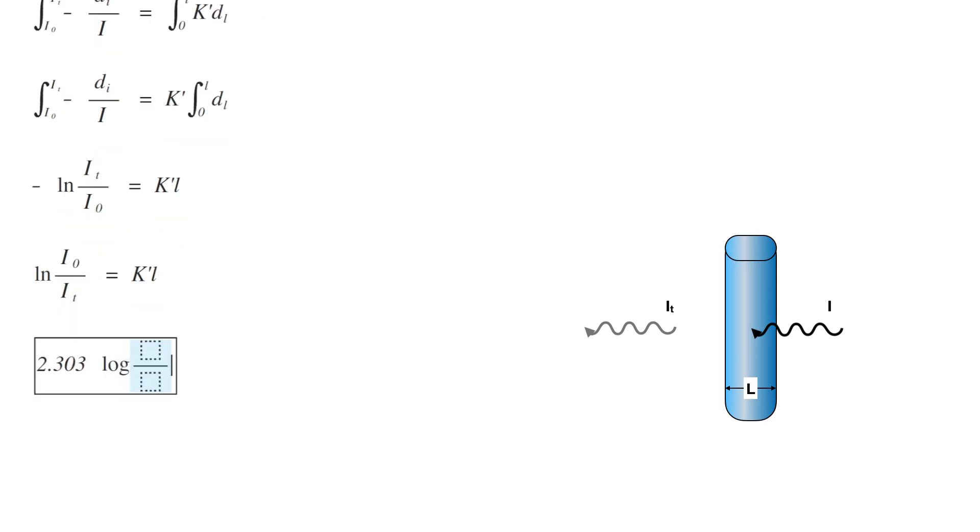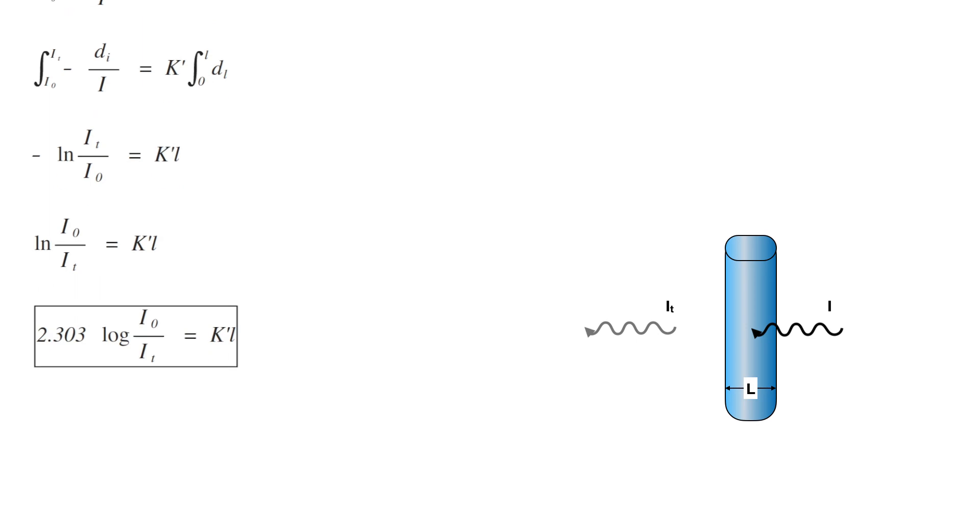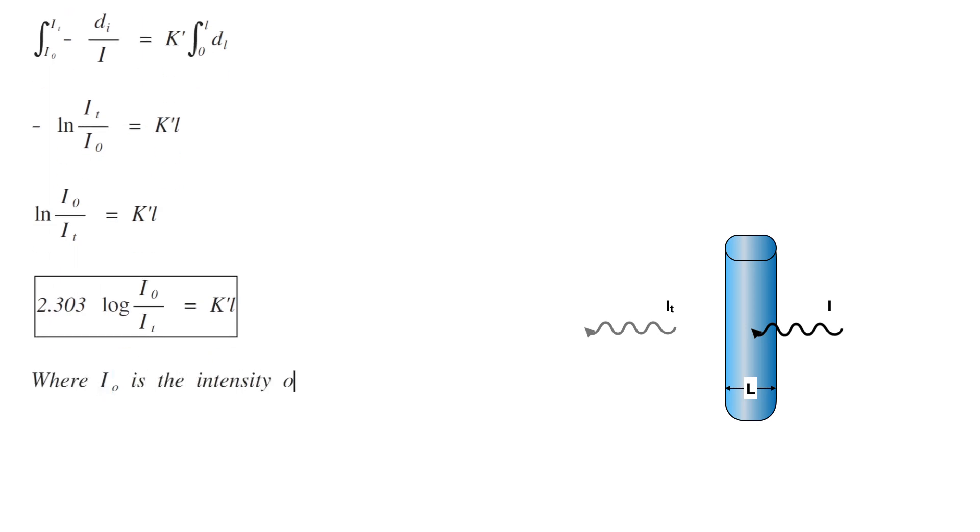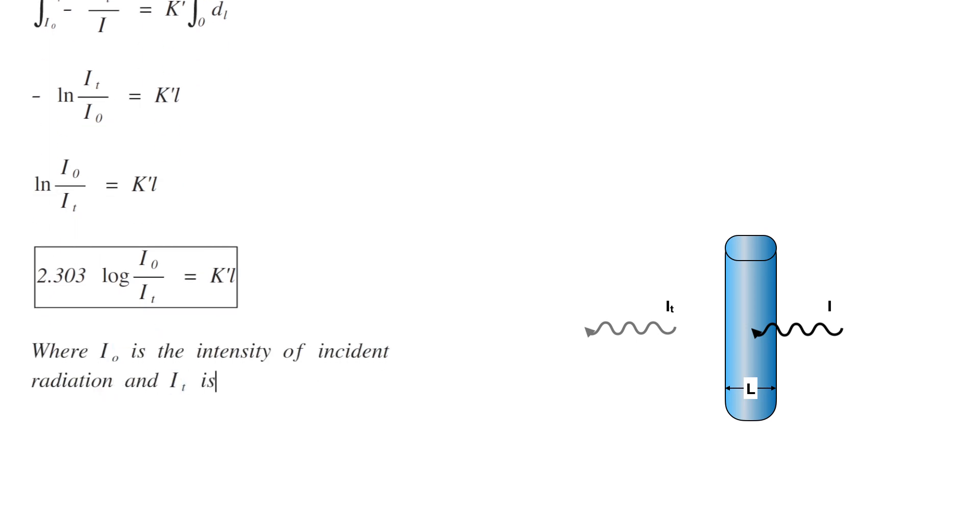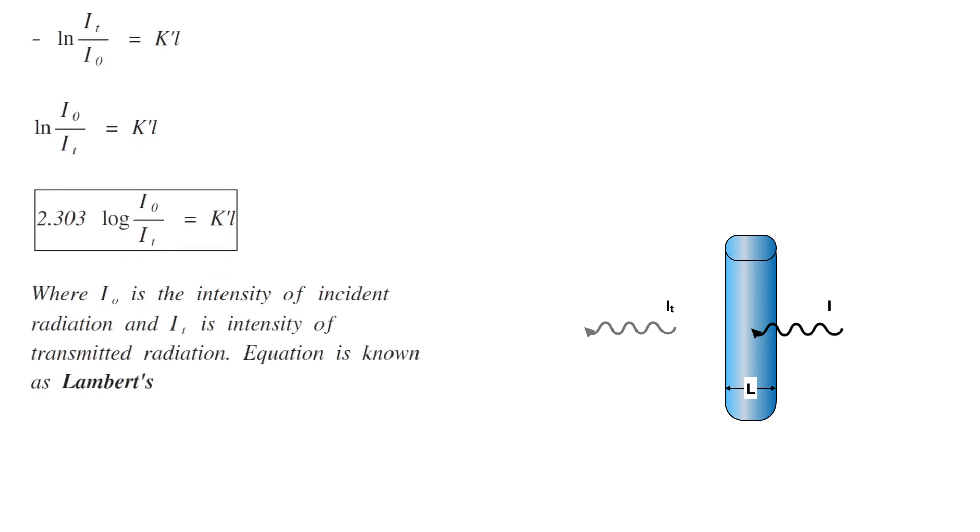Now we can convert this natural log to log base 10. So it becomes 2.303 log of I₀ by Iₜ equals K' L, where I₀ is the intensity of incident radiation and Iₜ is intensity of transmitted radiation. This equation is known as Lambert's absorption equation.